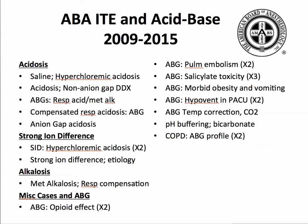Miscellaneous cases in arterial blood gas include opioid effect — opioids cause respiratory depression so CO2 will become elevated — pulmonary embolism, salicylate toxicity with anion gap metabolic acidosis, the effect of hypoventilation in the recovery room which would be hypercarbia and acute respiratory acidosis, temperature correction on the CO2 (hypothermia results in a lower PaCO2, hyperthermia in a higher PaCO2), and COPD, classically associated with CO2 retention with metabolic compensation — a rise in bicarbonate.